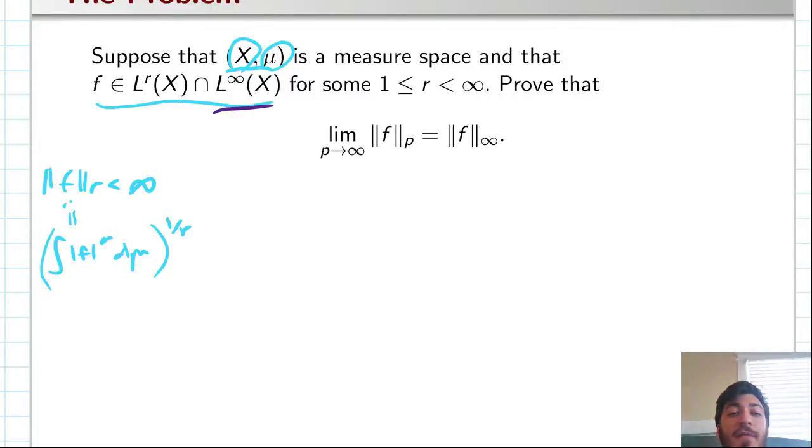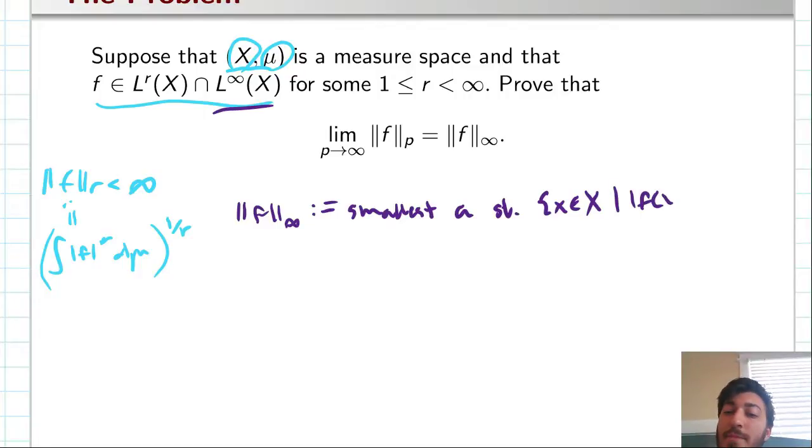Substantially different is the infinity norm. So you may have heard the L^infinity norm, or you may remind yourself by saying it's the essential supremum. Those are both fine. But we'll just take it to mean that it's the smallest A such that this set, all the members of x for which the absolute value f of x is larger than A, has measure 0. That's also the essential supremum, if you'd like that better.